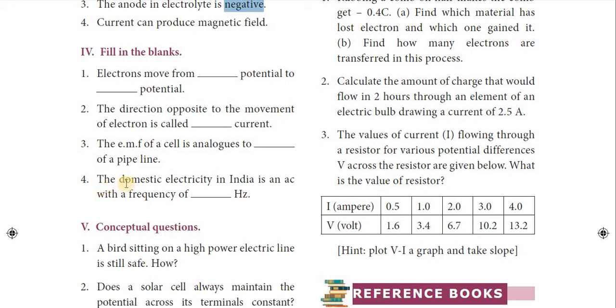Fourth question: the domestic electricity in India is an AC with a frequency of dash. The answer is 50 Hz.